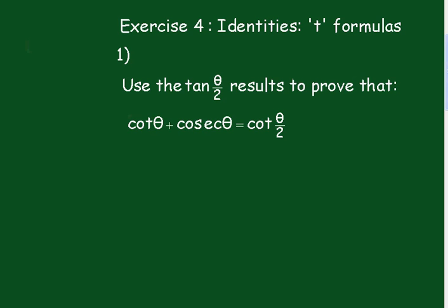Exercise for identities t-formulas, number 1. Use the tan(θ/2) results to prove that cot θ plus cosec θ equals cot(θ/2). Let's pause the video and have a go at this one.